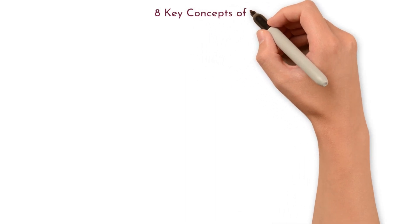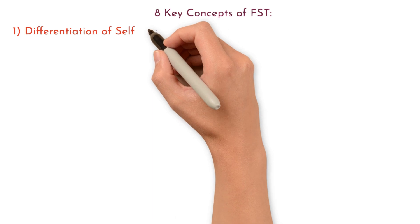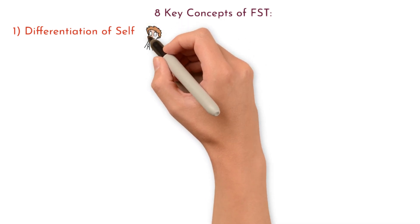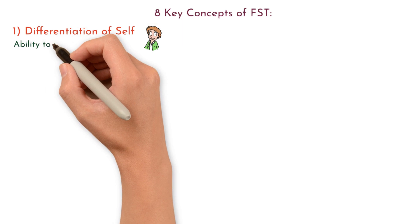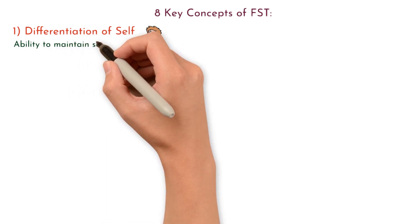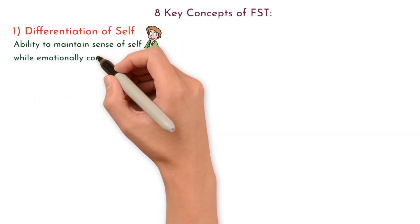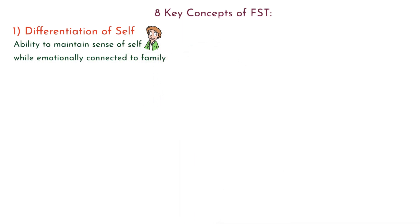1. Differentiation of self. This concept refers to an individual's ability to maintain their sense of self while staying emotionally connected to the family. Higher differentiation means better emotional regulation and less dependency on others' approval.